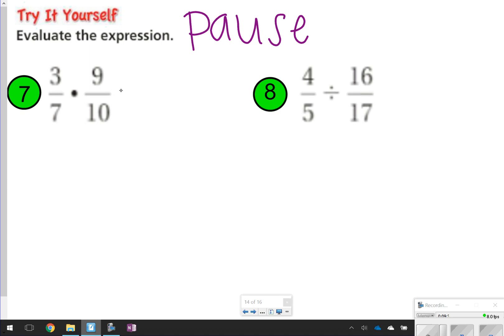Okay, so for this first one, we have 3 times 9, which is 27, and 7 times 10, which is 70. 27 and 70 do not have anything in common, so 27 over 70 is your final answer for number 7.